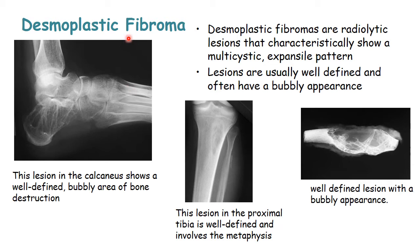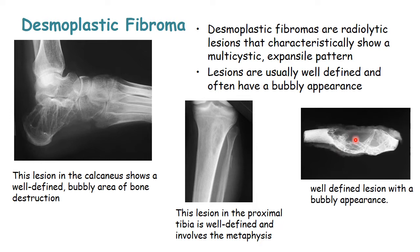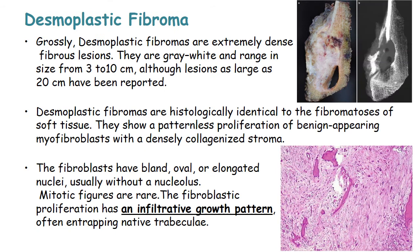Radiologically, desmoplastic fibroma has characteristic features: the lesions are radiolytic, characteristically showing bone expansion, and they are multicystic. Lesions are usually well-defined and often have a bubbly appearance. Here is a desmoplastic fibroma of the calcaneus — the lesion is well-defined and bubbly with areas of bone destruction. This lesion in the proximal tibia is more or less well-defined, occurring in the metaphysis, and shows bone expansion with a bubbly appearance — a characteristic radiological feature for desmoplastic fibroma.